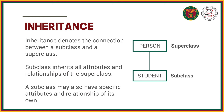Inheritance denotes the connection between a subclass and a superclass. A subclass inherits all attributes and relationships of the superclass, and a subclass may also have specific attributes and relationships of its own. Here on the right side, we have a person as our superclass and student as our subclass. All attributes and relationships associated with entity person will be inherited by the entity student, but entity student can also have its own specific attributes and relationships.